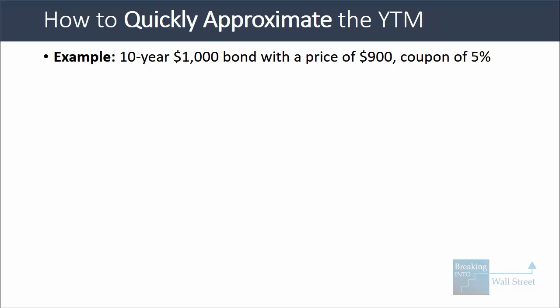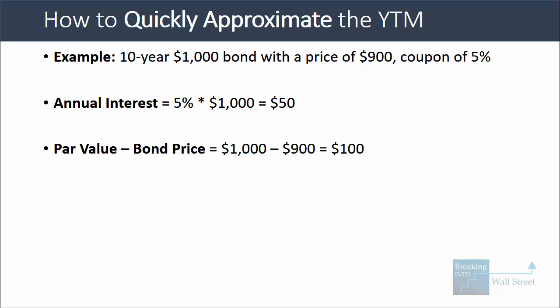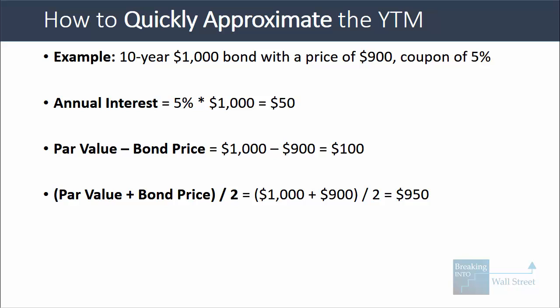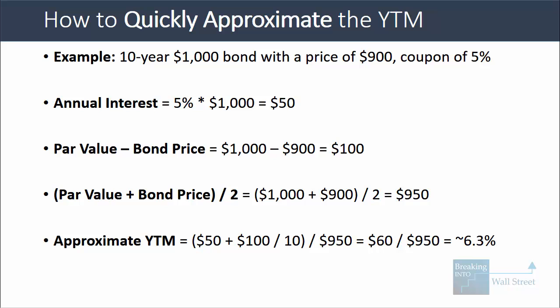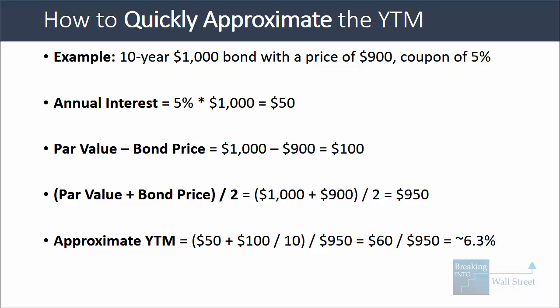This approximation works pretty well. The real yield to maturity is 6.383% and our approximation is 6.316%. For a 10-year $1,000 bond with a market price of $900 and a coupon of 5%, the annual interest is 5% × $1,000 = $50. Par minus bond price is $100, and the average between par and bond price is $950. So the approximate YTM is (50 + 10) / 950 = 60 / 950. Since 60 / 1,000 is 6%, dividing by 950 gives just above 6% — about 6.3%.